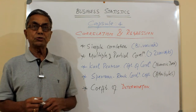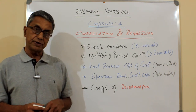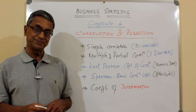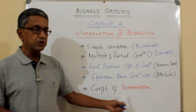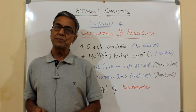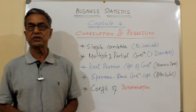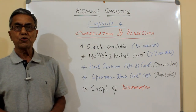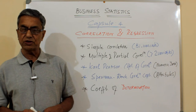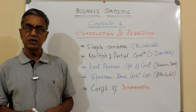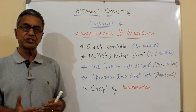Finally, a very important parameter in correlation is the coefficient of determination. The coefficient of determination is the square of the correlation coefficient, and it tells what percentage of the data set truly points toward the correlation.